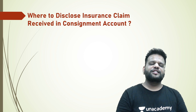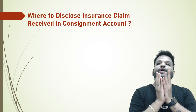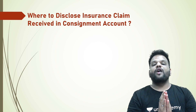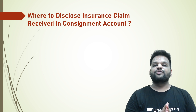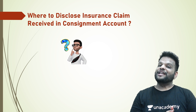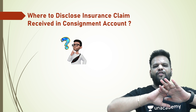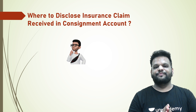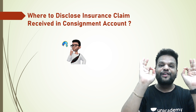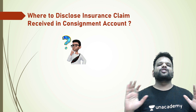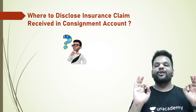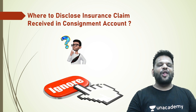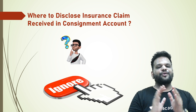The most important and confusing point where students get troubled: if the question mentions that an insurance claim has been received, where should that amount be disclosed — in the Consignment account? The answer is: as already shown in the journal entry, the Consignment account is credited with the full value of abnormal loss, which means any insurance claim received is to be ignored in consignment accounts.